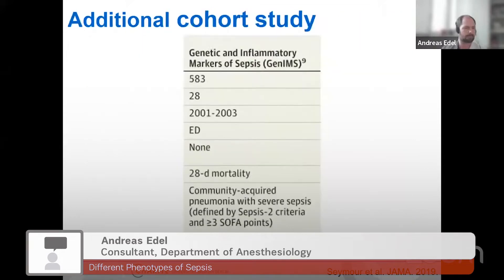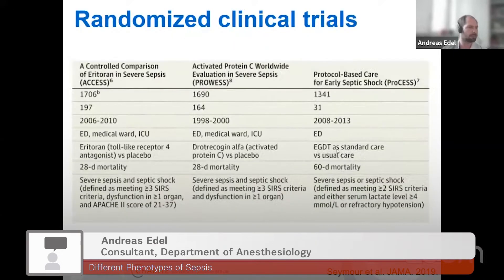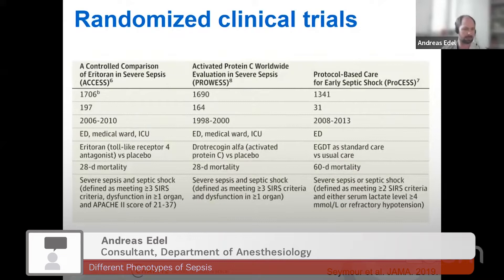They also got additional cohort studies with additional information to find differences in biomarkers. And they used randomized clinical trials — big trials from the past. We will focus later on the ProCESS trial, the protocol-based care for early septic shock — a randomized clinical trial that wanted to analyze the impact of early goal-directed therapy versus normal therapy.